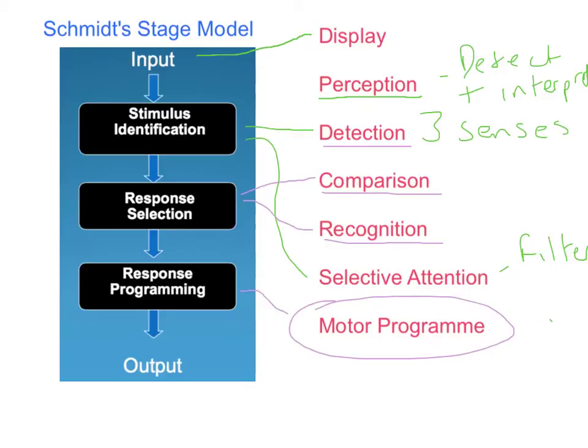We're sending the motor program via electrical impulses and the central nervous system to our muscles. Once it arrives at our muscles, we will then perform that movement and hopefully head the ball into the back of the net.